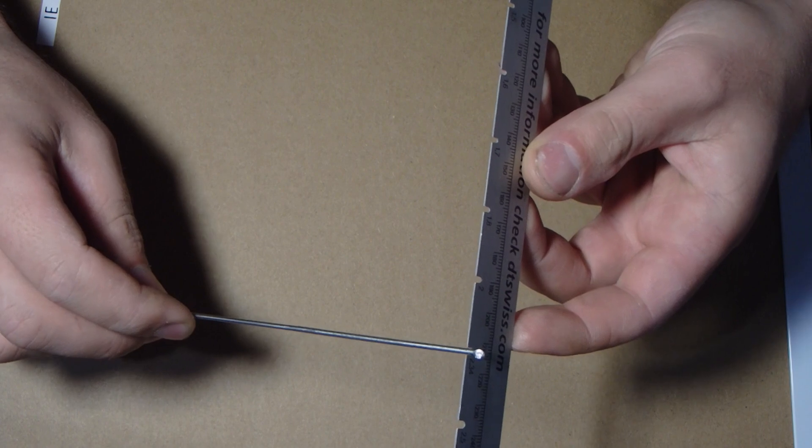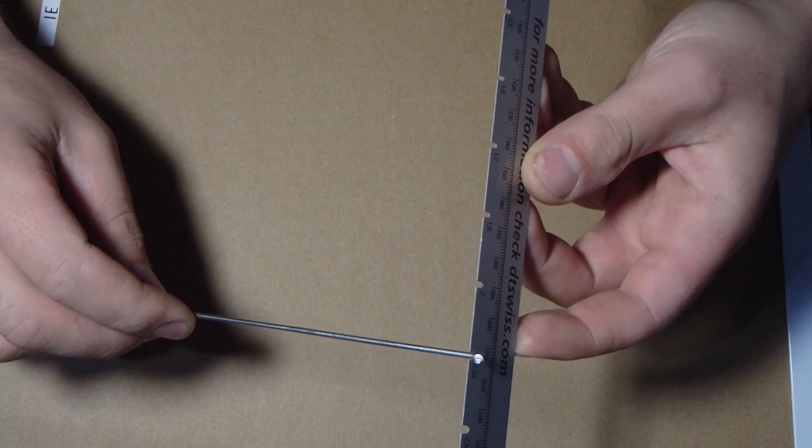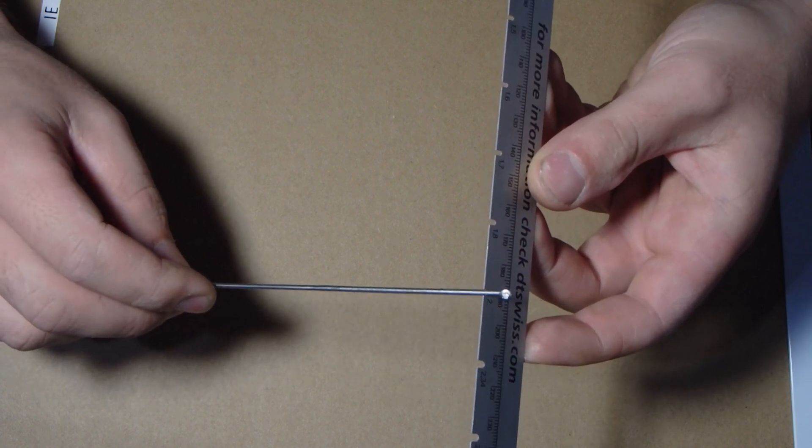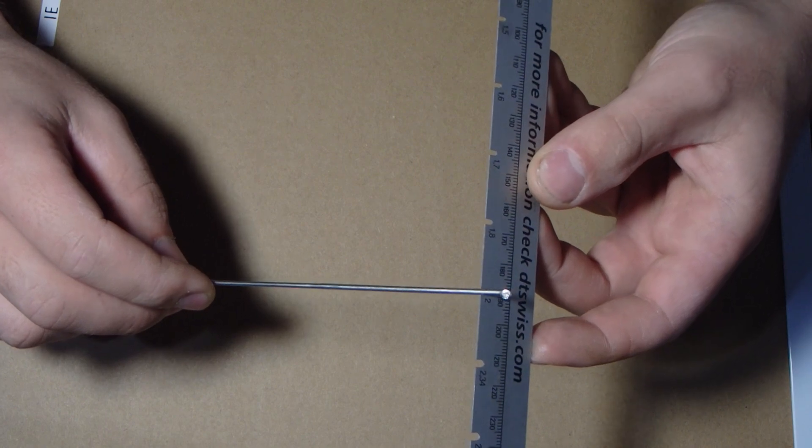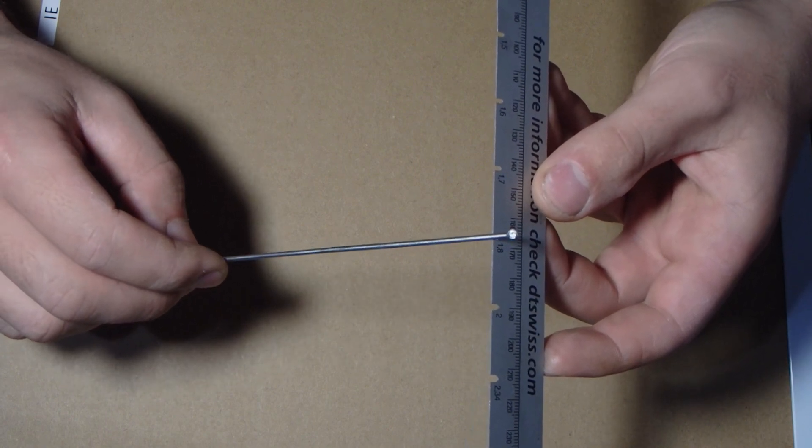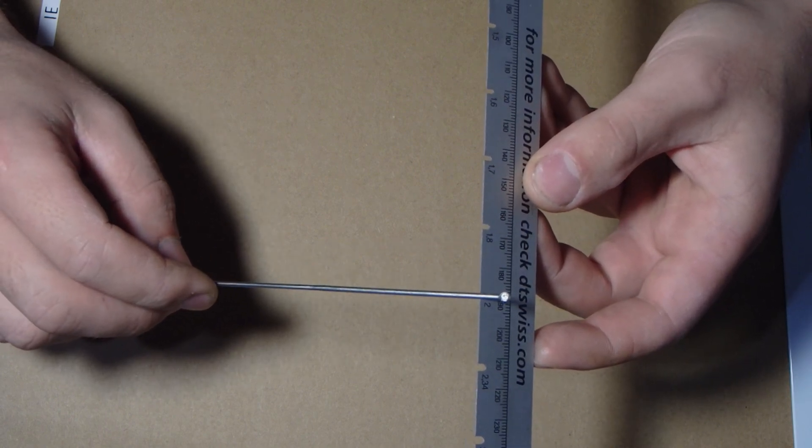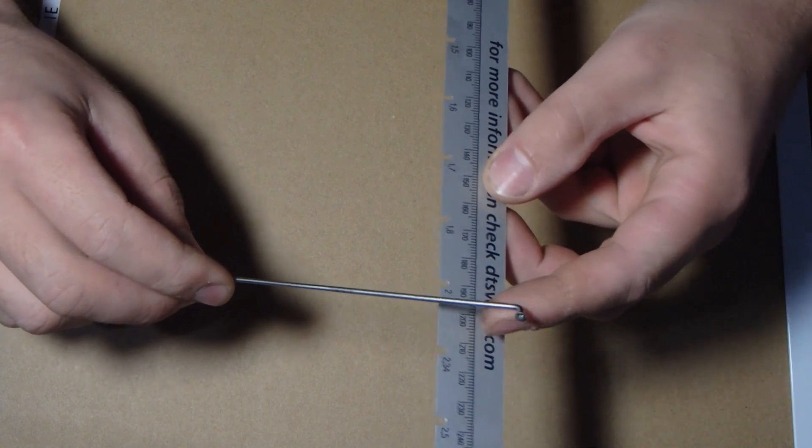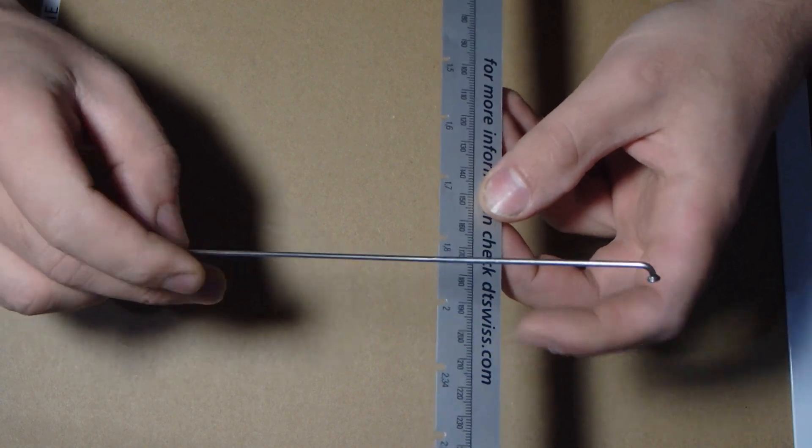So this one in the 2.34 fits really easily, it's got a bit of float in it so it's probably smaller, but 2 fits pretty snug so it's probably a 2. We'll check a bit lower anyway and 1.5mm doesn't fit, so this is a 2mm initial section on the spoke.